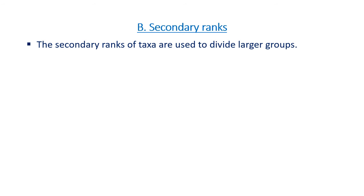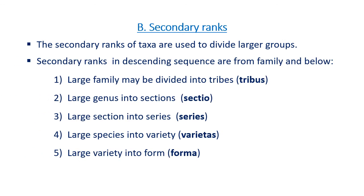In the secondary ranks, the ranks are used to divide larger groups. The secondary ranks in descending sequence are: from family and below — a large family may be divided into tribes, a large genus into sections, section into series, series into variety, and variety into forma.